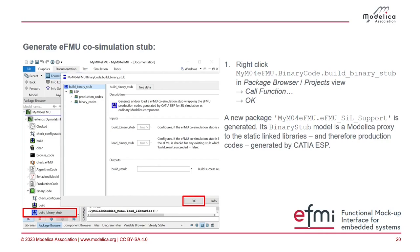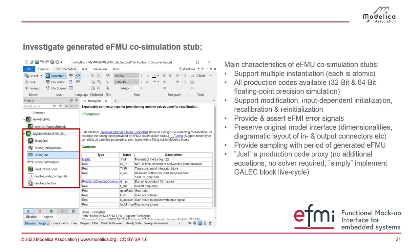To generate this proxy, open the extensio view, go to binary code, and call build binary stub. Call the function and press OK, and it will generate a binary stub. This binary stub is a new package whose name is derived from your original configuration package — so myM04EFMU.EFMU software in the loop support. This stub is for the CATIA ESP code and has nice characteristics: we always support multiple instantiation. So unlike some FMU imports where global variable overlaps cause problems, EFMI production code is self-contained, and the stubs also support multiple instantiation.